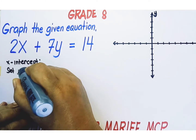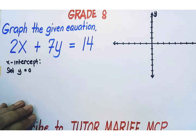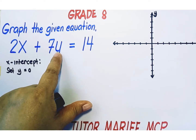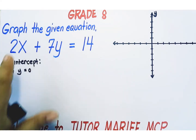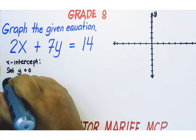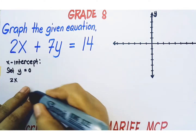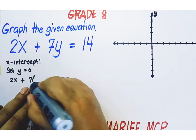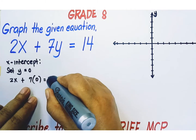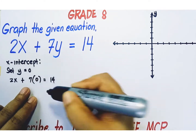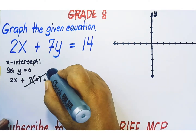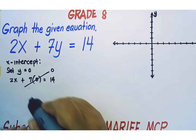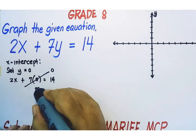We set y to zero — replace y with zero, then solve for the value of x. 2x plus 7 times zero equals 14. Any number multiplied by zero is always equal to zero.